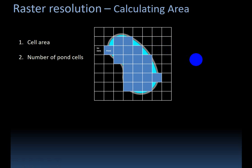So in order to calculate the area of the pond from a raster, we need to know two things. Number one is the area of one cell, and then we need to know how many pond cells there are.